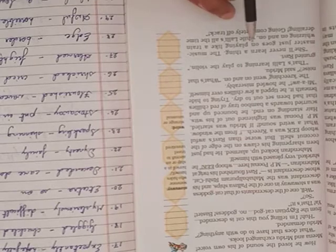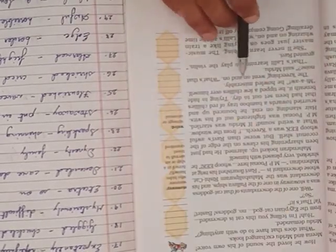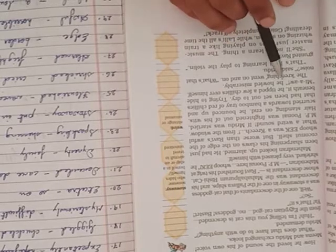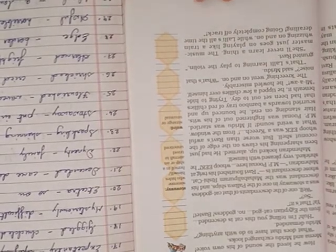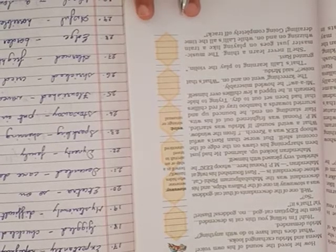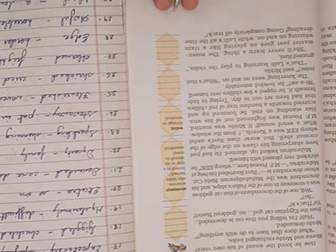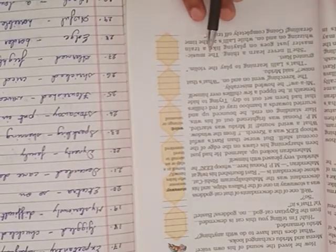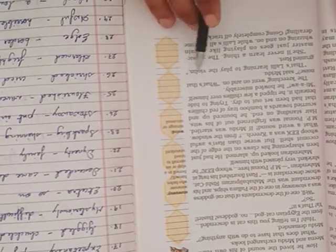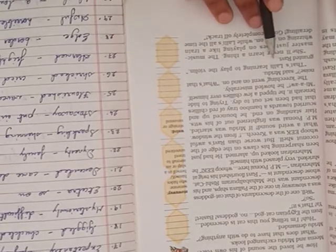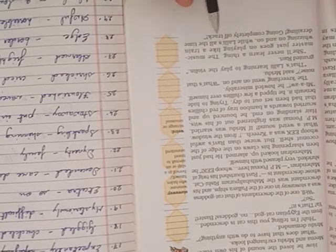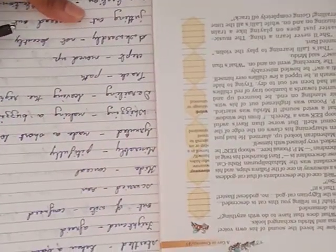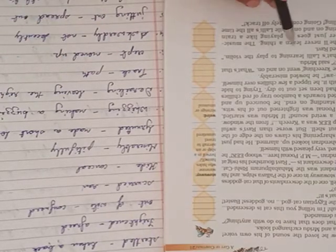M.P. Punei, trying to hide beneath it, tipped a few chilies over himself. Meow, he howled miserably. The screeching went on and on. What's that noise? said Mridu. That's Lali learning to play the violin, granted Ravi.